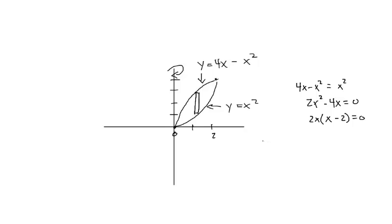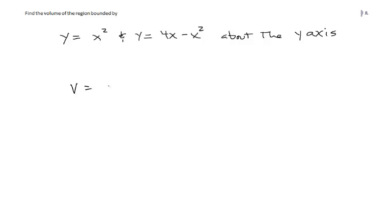We need to know the area, which is the top function minus the bottom function. Our top function is 4x minus x squared, so the volume equals 2π times the integral from 0 to 2 of the radius x times the area (4x minus x squared minus x squared) dx.